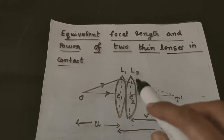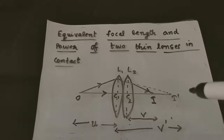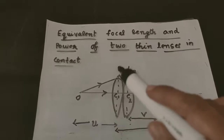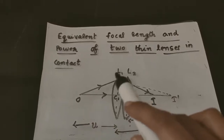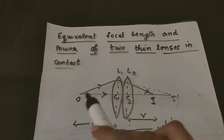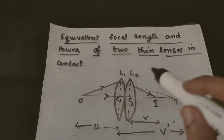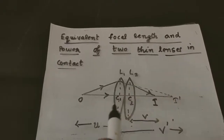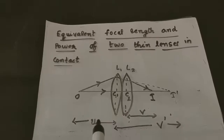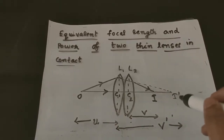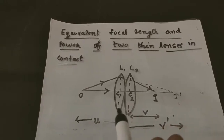Imagine if the second lens is absent. Then the real image of point object O is formed at the point I' on the principal axis due to the first lens. Light rays from the point object undergo refraction and a real image is formed at point I' due to lens L1. The object distance is U and the image distance is V'.